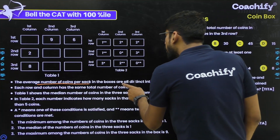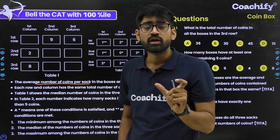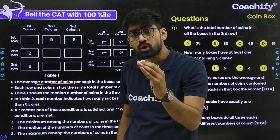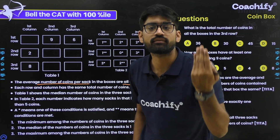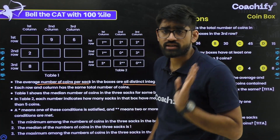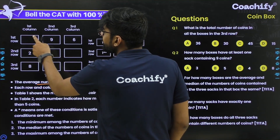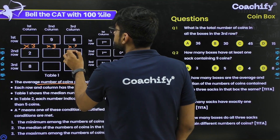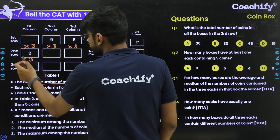The averages are all distinct integers. For the value to be an integer, the sum of all coins in the three sacks must be a multiple of three. So whatever the number of coins in any box, it will be a multiple of three. The same applies to each column as well.